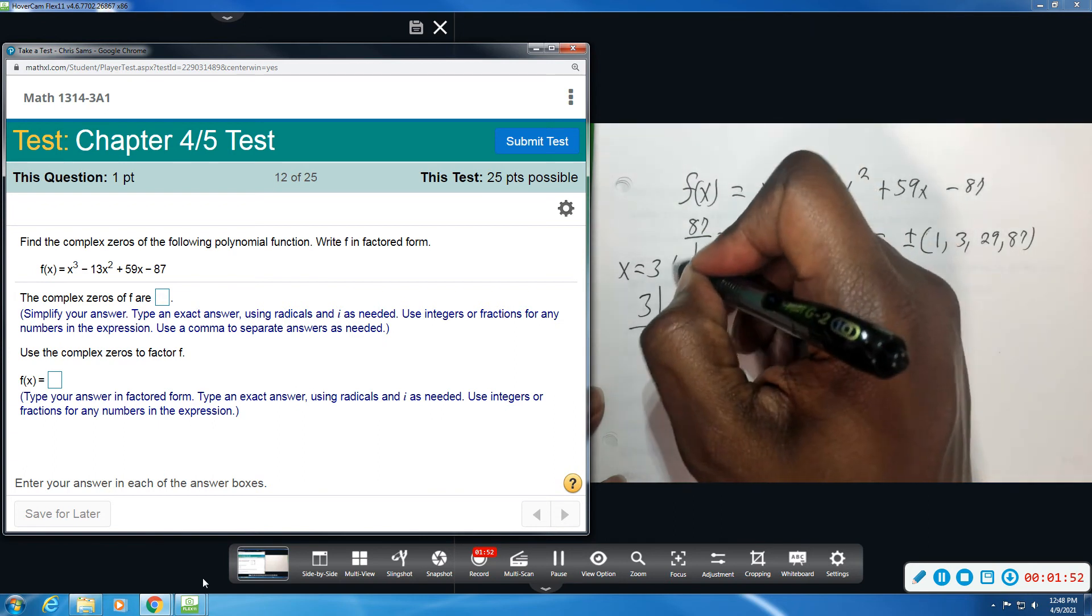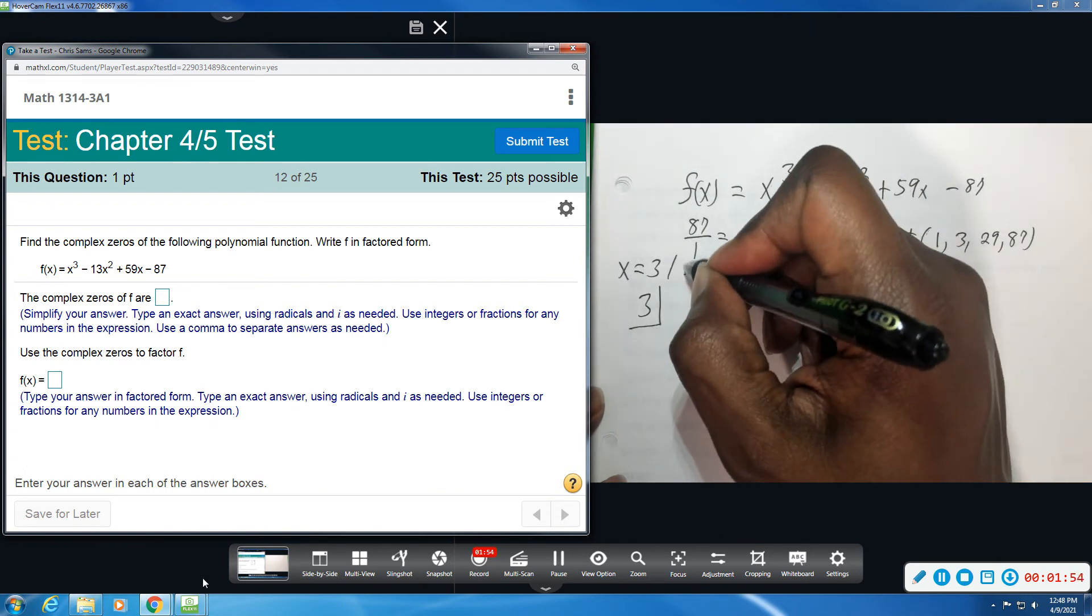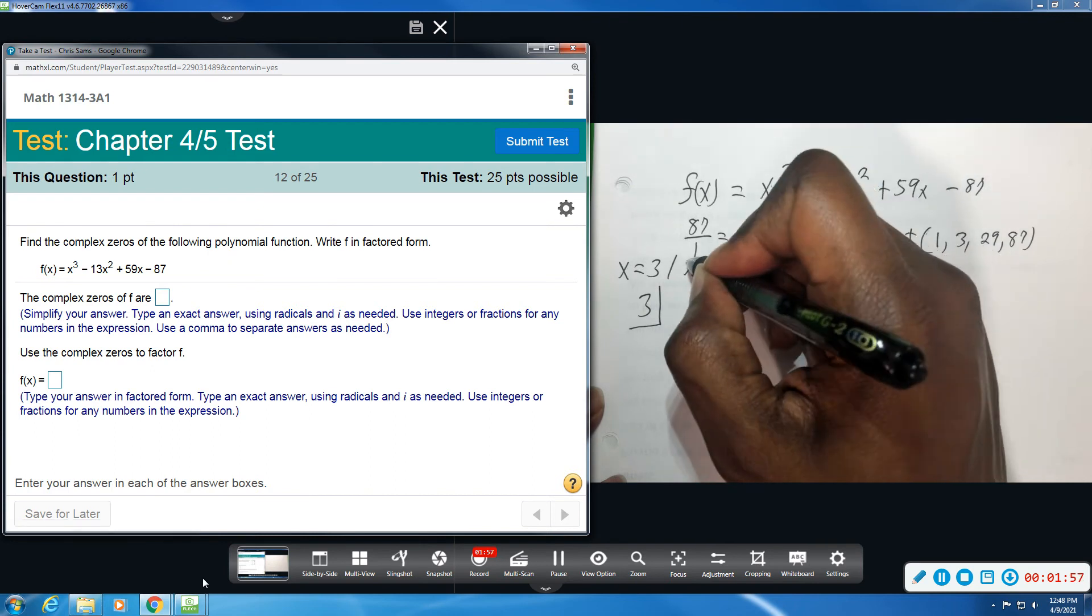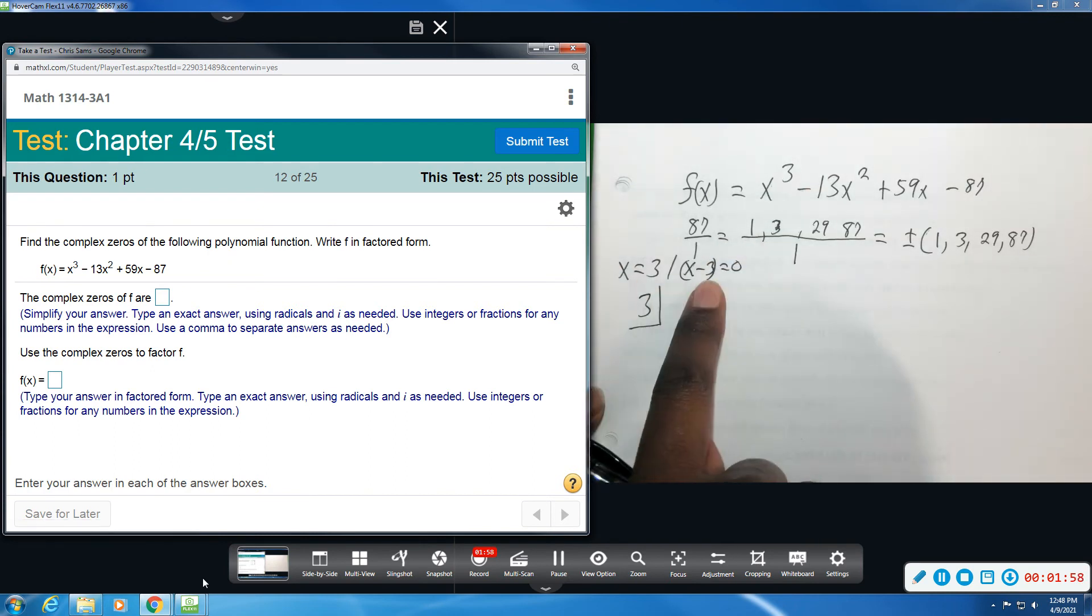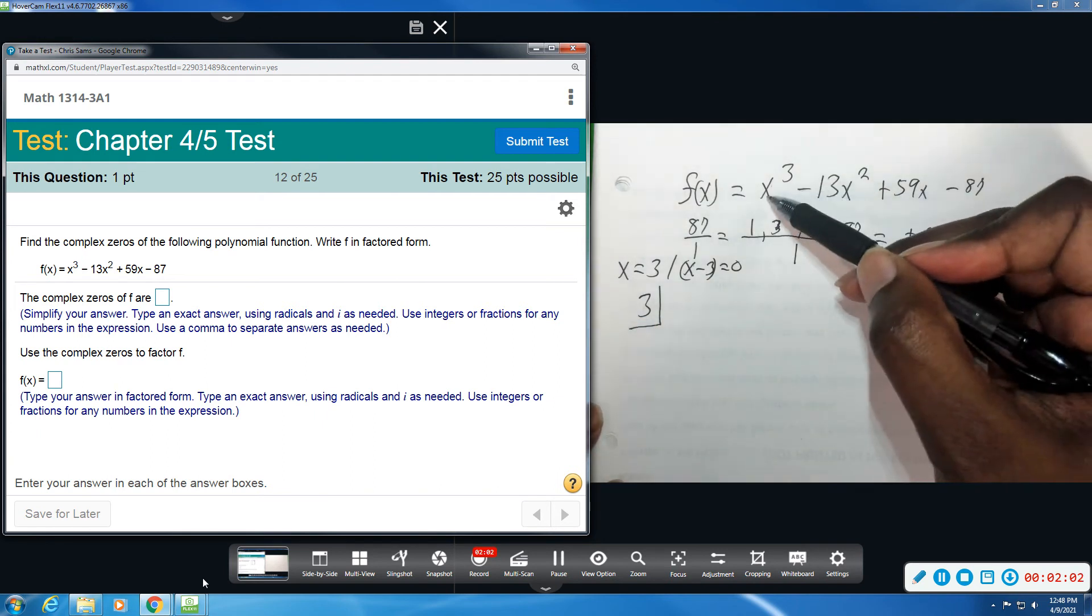As a linear factor, if I set this equal to 0, that would be x - 3 = 0. This would be the linear factor. So you're going to need that part at the end, but let's see if 3 works. So we look at our original.